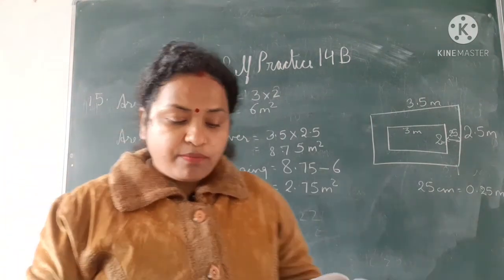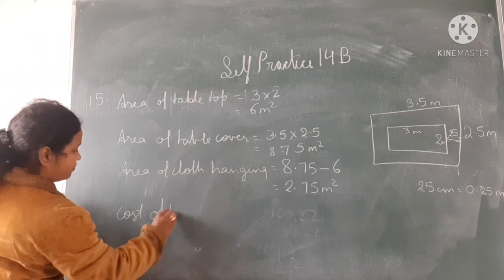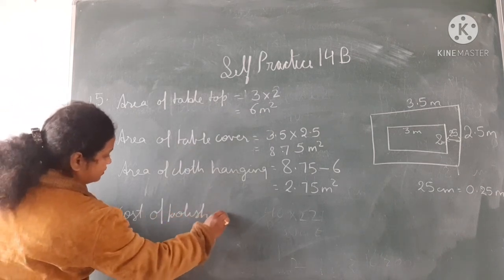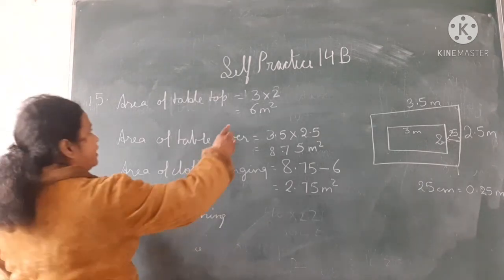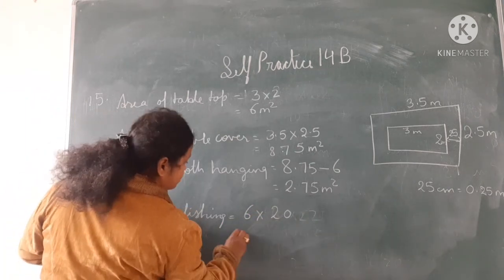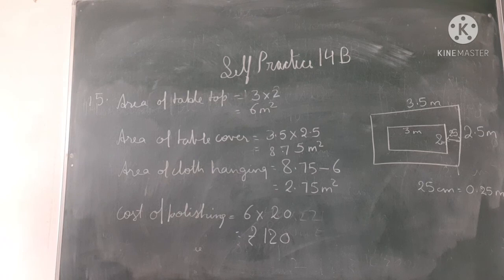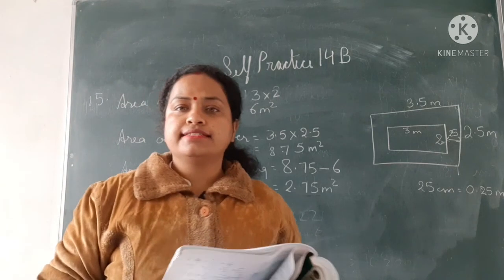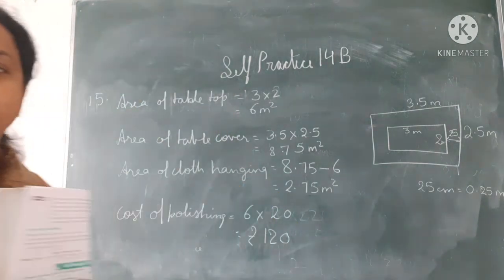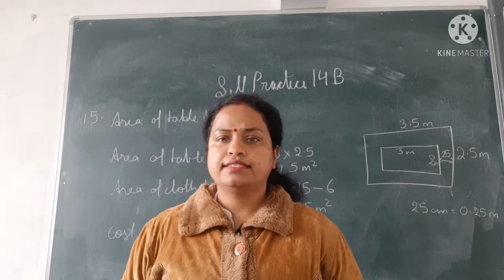Find the cost of polishing the table top at ₹20 per square metre. Cost of polishing equals 6 into 20, that is ₹120. That will be the cost of polishing the table top. Okay students, that is all for today. Thank you and have a nice day.